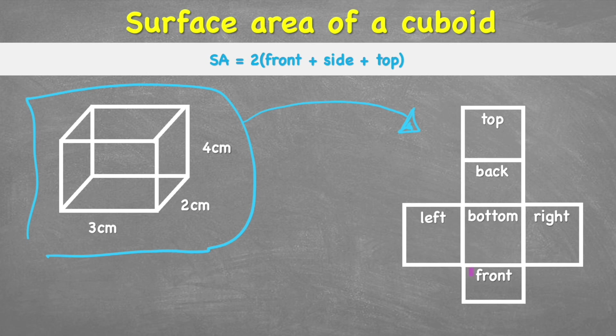But one thing to notice, we can see that the front will therefore be the same shape as the back, the top will be the same shape as the bottom, and the left will be the same shape as the right. So therefore our formula is we can simply just work out the area of the front, side and top, and then multiply it by 2.